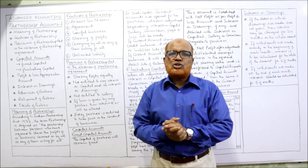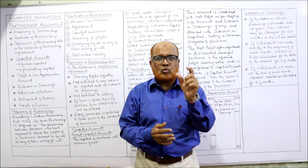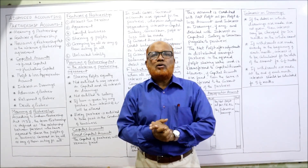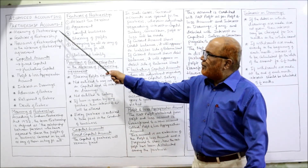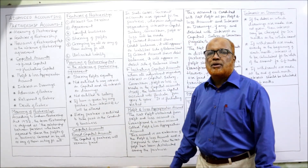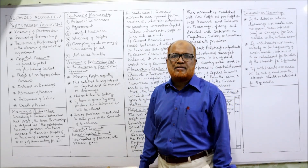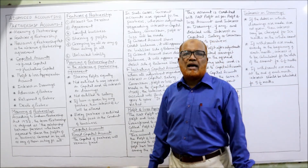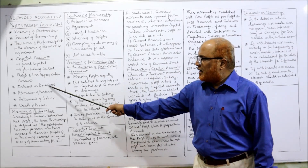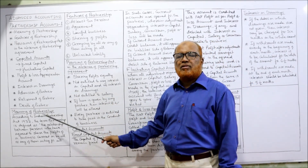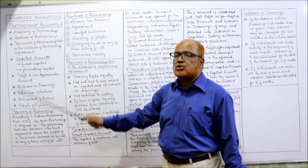The new topic is Partnership. So partnership accounts 1 — there are two partnership parts: partnership accounts 1 and partnership accounts 2. In this video I am going to explain the complete theory regarding partnership accounts 1. The topics I am going to cover are: meaning of partnership, features of partnership, provisions of the partnership act applied whenever the partnership agreement is silent, capital accounts, fixed capital and fluctuating capital, profit and loss appropriation account, distribution of profit, interest on drawings, admission of partner, and retirement of partner.